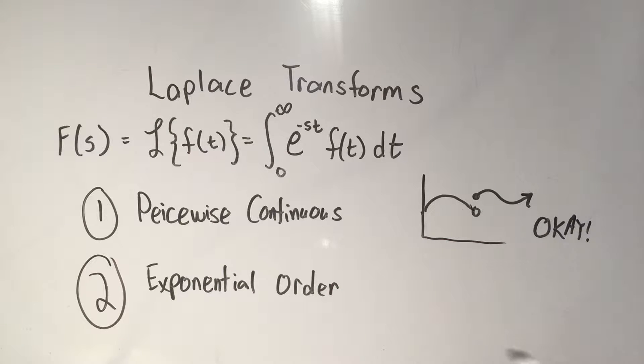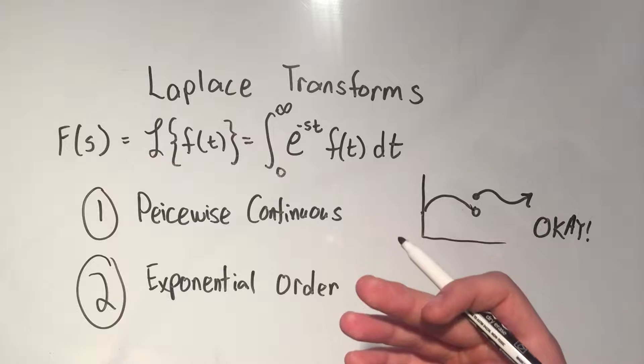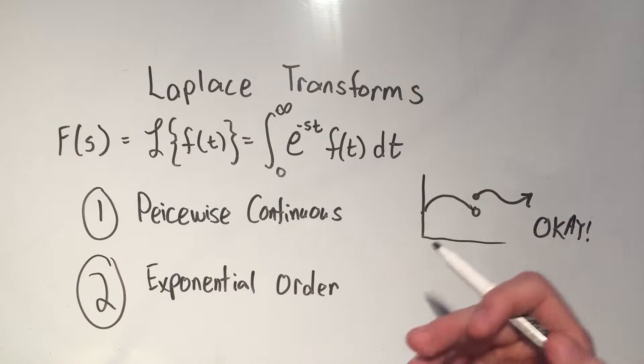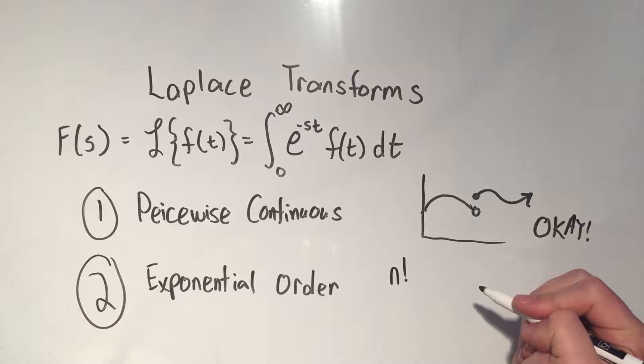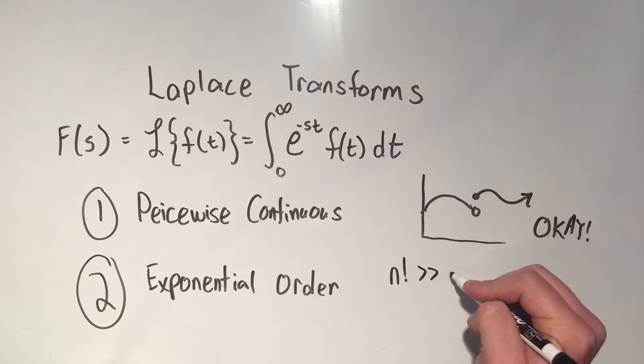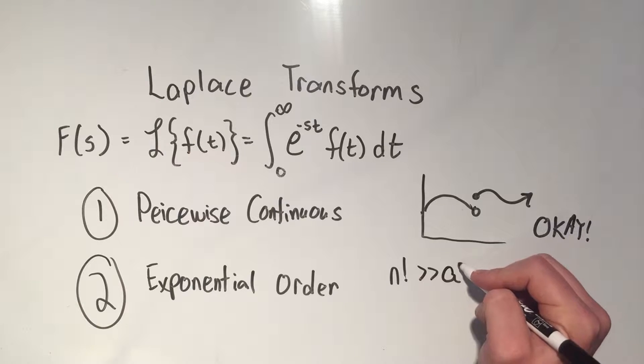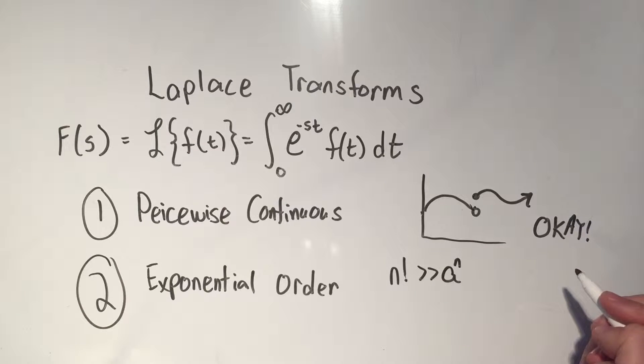That means your function only grows as fast or slower as an exponential function. So something like n factorial. n factorial grows faster than exponential functions do.